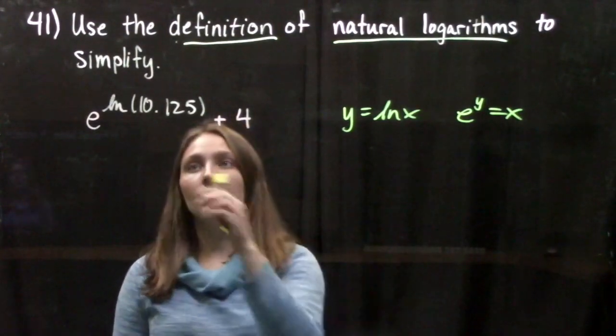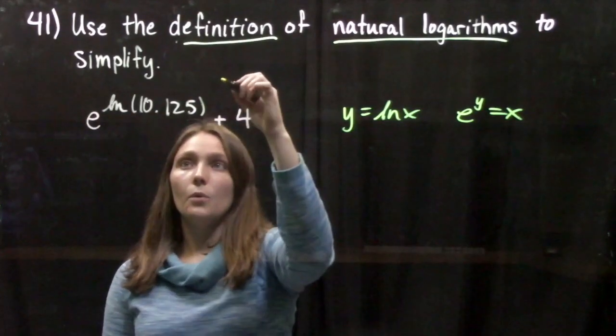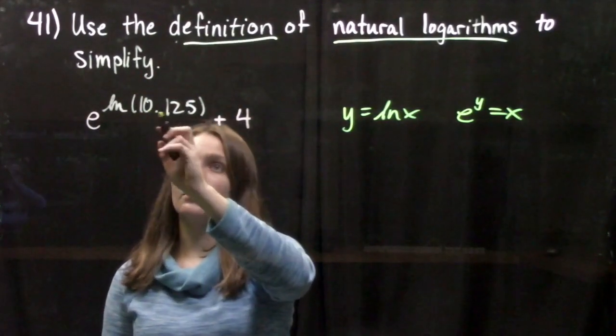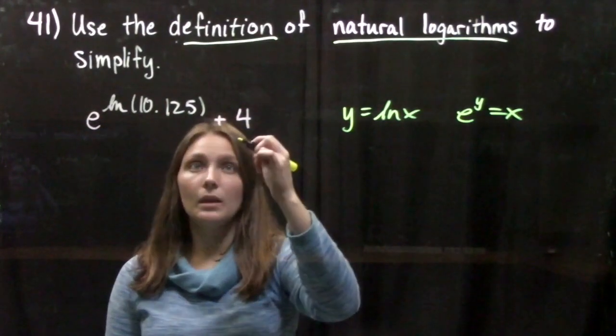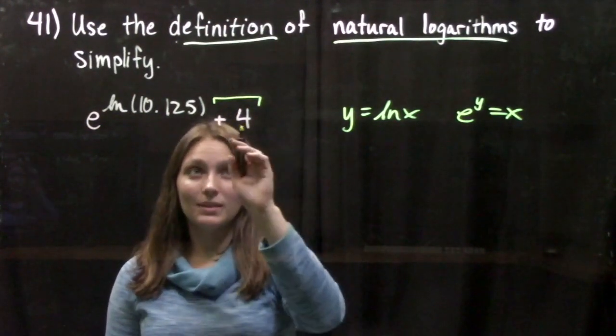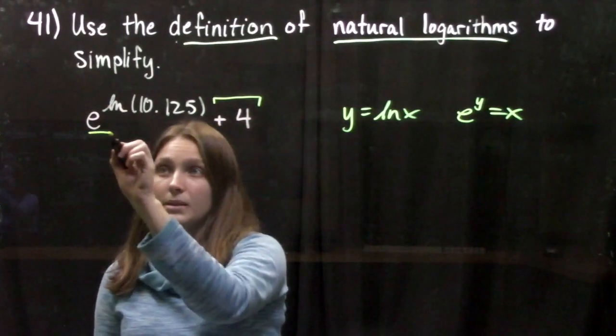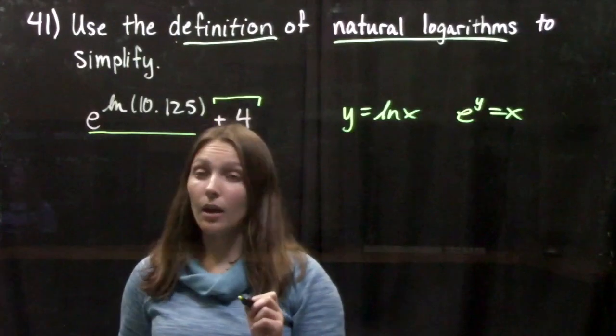So this is what we're going to be using. Now looking over at this problem here, we notice that we want to simplify this whole expression: e to the natural log of 10.125 plus 4. This plus 4 we're going to ignore for a little bit because that's not the part we want to simplify. It's as simplified as it can be. We are going to simplify this e to the natural log portion of it.